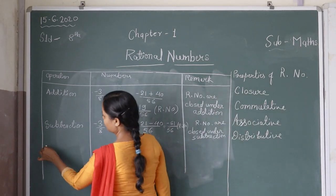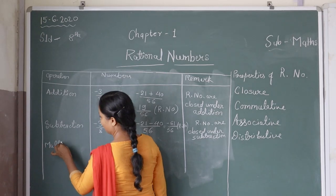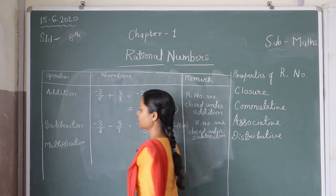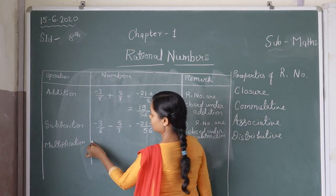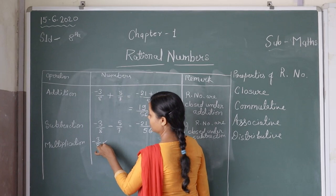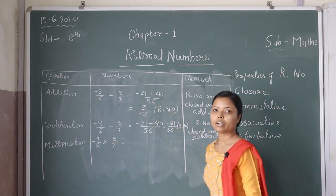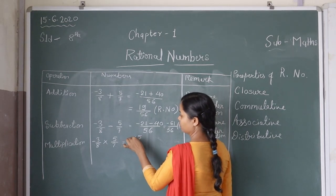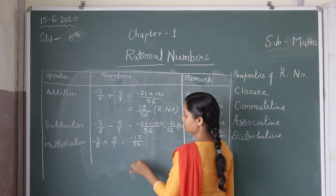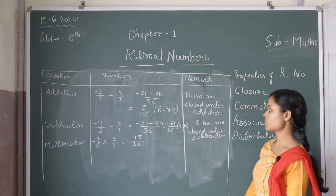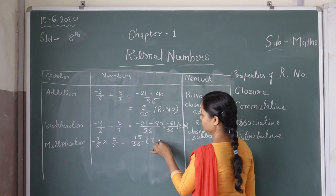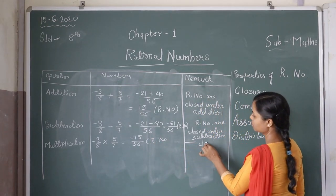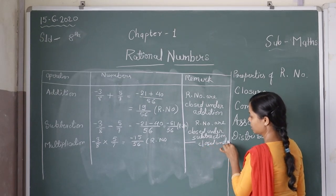Next one is multiplication. Taking the same numbers, minus three by eight multiplied by five by seven. Three multiplied by five is 15, eight multiplied by seven is 56. This is also a rational number. So we can say that rational numbers are closed under multiplication.